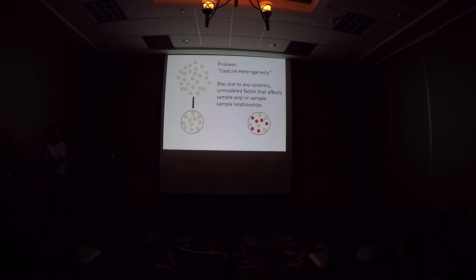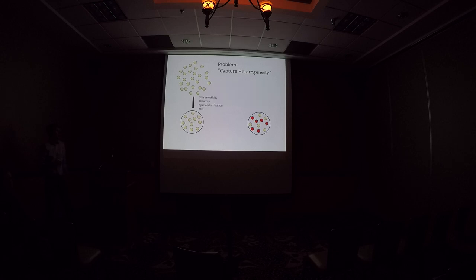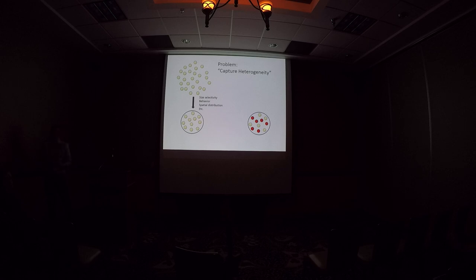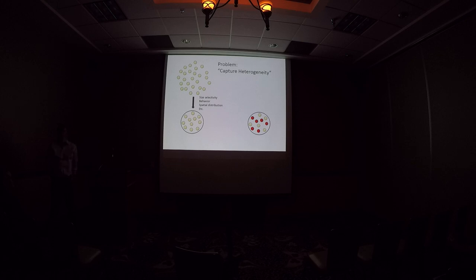Capture heterogeneity can happen from your sample not reflecting the actual population. For example, size selectivity: if you're using gill nets that are really good at capturing 500-millimeter fish, most of the fish you get are that size. You mark them, throw them back, and when you go out to net again, you mostly get 500-millimeter fish, missing all the other fish that go right through the net. This still tells you something about the population — it might not be what you think it is, but it contains useful information that you can use if you can parse out what's happening.